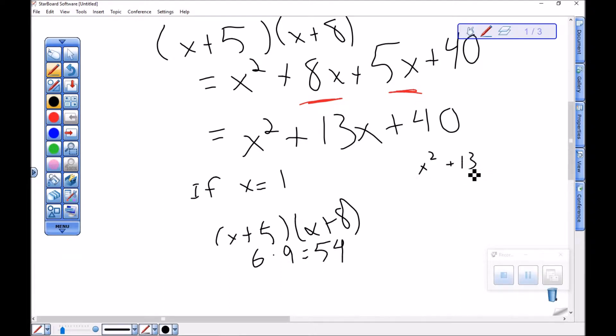x squared plus 13x plus 40 is 1 squared, which is 1, plus 13 times 1, which is 13, plus 40 is 1, 14, 54.